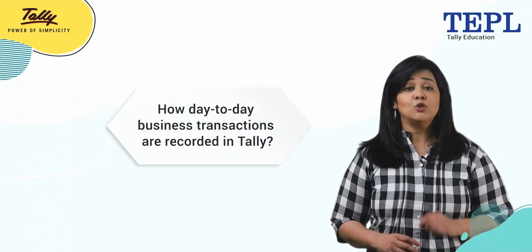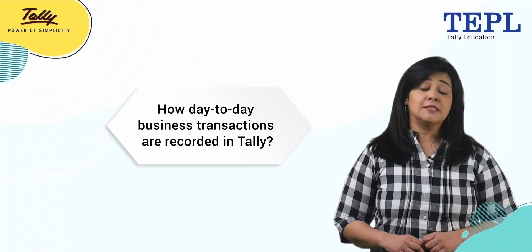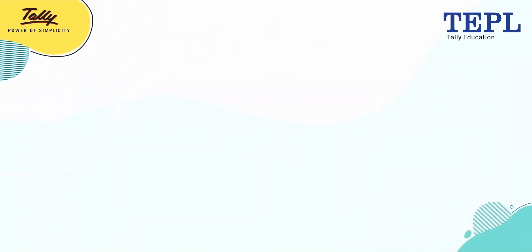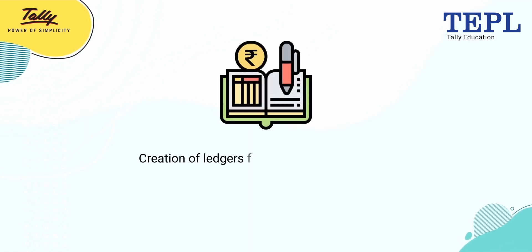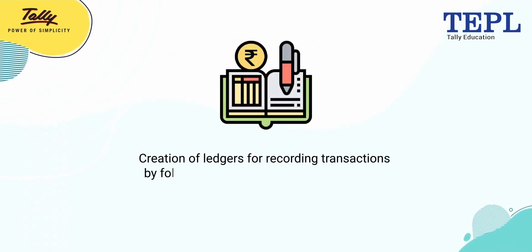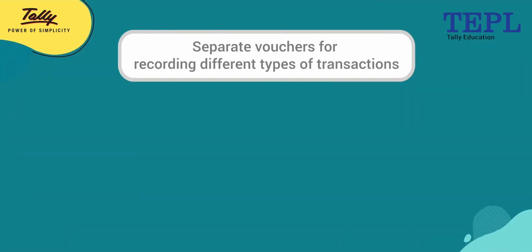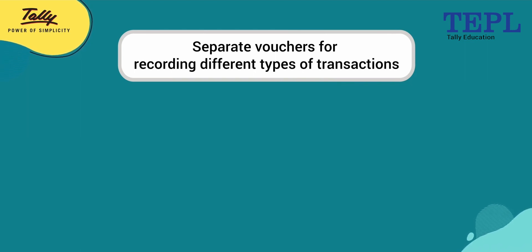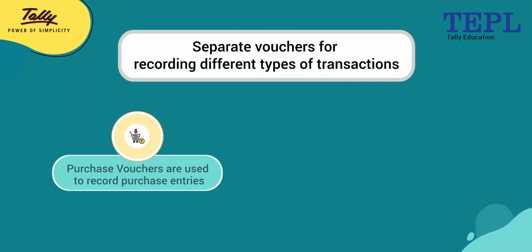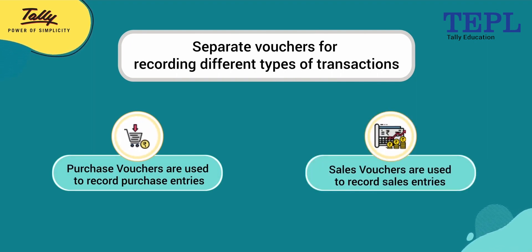Let's now see how to record day-to-day business transactions in Tally. In Tally, the first step is the one-time activity of the creation of ledgers for recording transactions. Transactions recorded will follow the golden rules of accounting. Separate vouchers are used for recording different types of transactions. For example, purchase vouchers are used to record purchase entries. Sales vouchers are used to record sales entries.